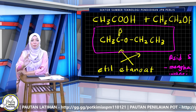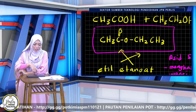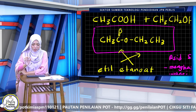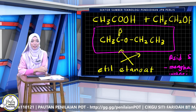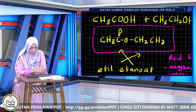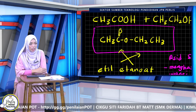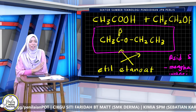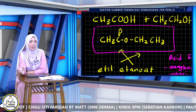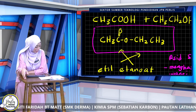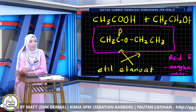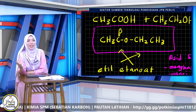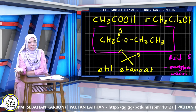Bila kita lukis, kita akan lukis bahagian asid karboksilik dahulu, diikuti dengan alkohol. Tapi bila nama terbalik — letak nama alkohol dulu. Ethyl etanoat. Cikgu nak test yang hadir dalam Google Meet: katakan asid etanoic bertindak balas dengan metanol, apakah nama esternya? Jawapan: metil etanoat. Sebab asid etanoic → etanoat, dan metanol → metil. Jadi metil etanoat.